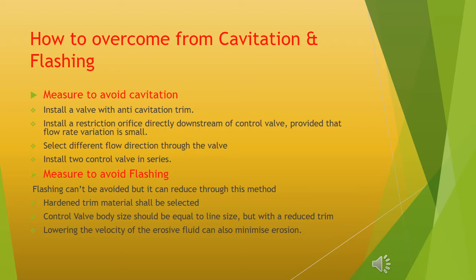How to overcome cavitation and flashing: install a valve with anti-cavitation trim; install a restriction orifice directly downstream of the control valve, provided that flow rate variation is small; select a different flow direction through the valve; install two control valves in series. To avoid flashing: flashing cannot be avoided but it can be reduced through these methods — hardened trim materials shall be selected; control valve body size should be equal to line size but with a reduced trim; lowering the velocity of the erosive fluid can also minimize erosion.